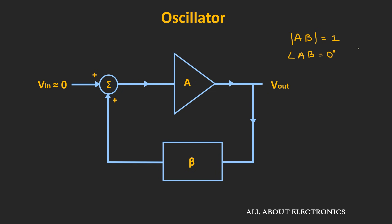Now, the two criteria for sustained oscillations can also be proved mathematically. Let's say the output of the feedback circuit is Vf, and this signal Vf gets added to the input signal. If the input signal is present, then the input to the amplifier will be equal to Vin plus Vf, and at the output we will get A times (Vin + Vf). Here, Vf is nothing but β times the output voltage.